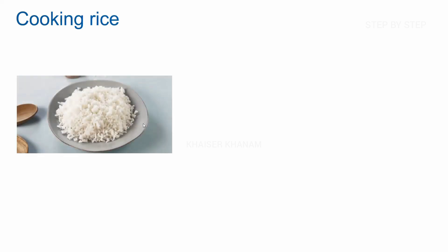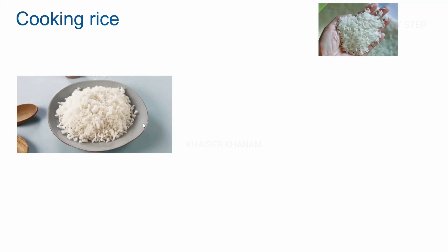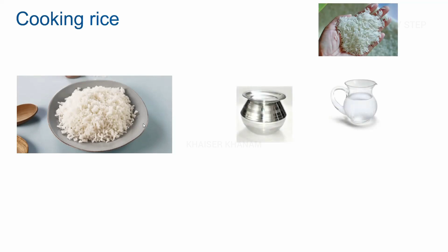Now I just want to cook rice. So for that I want my results like this — cooked rice. To get cooked rice, what do I need? I need raw rice, I need a cooking pot, I need water, and I need a stove and cylinder. These are the four things which I require to cook the rice, and we will also be putting salt for taste, but these are the four most important things we need to get this result.